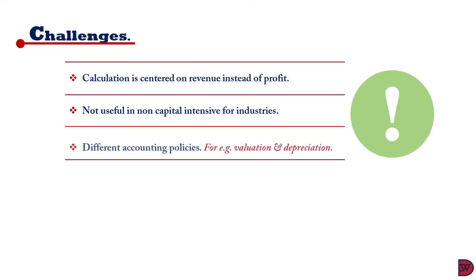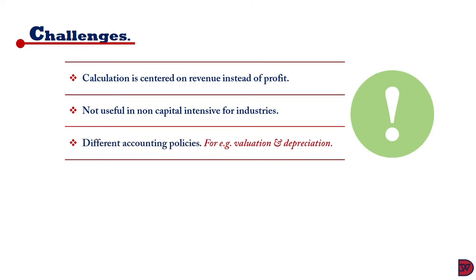Lastly, different accounting policies can affect comparability because non-current asset valuation methods differ: one business may measure assets at cost while another uses the revaluation model, making ratios incomparable. The asset's age also matters — a business with newer assets will have a higher net book value than one whose assets have been depreciated over time, producing different ratios.